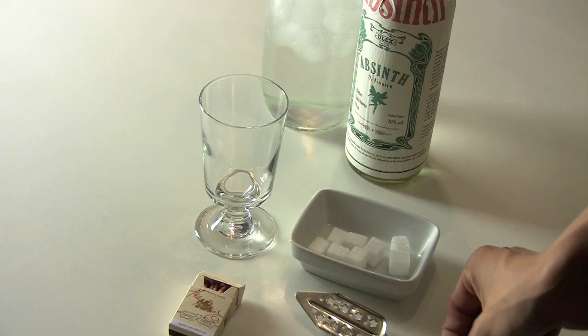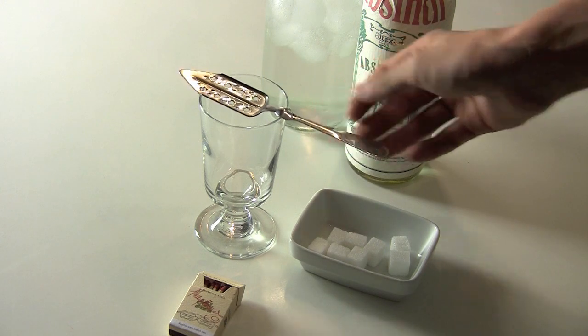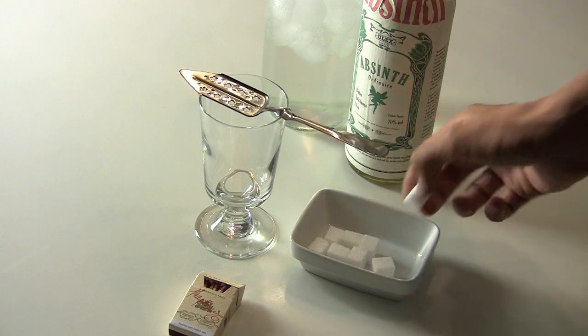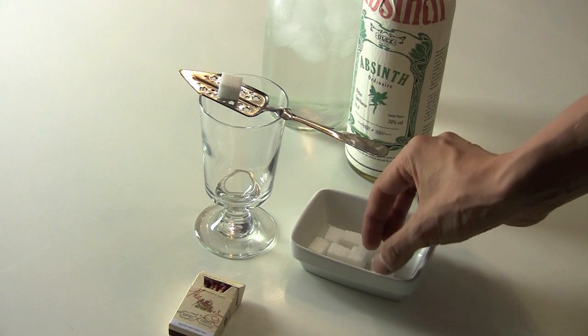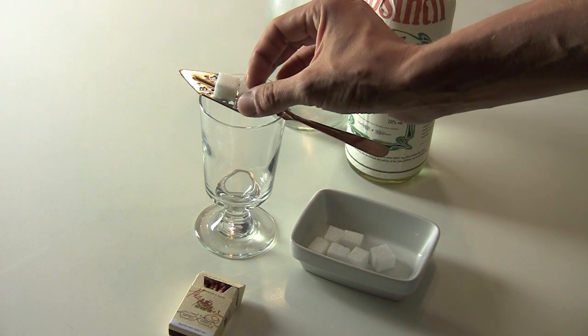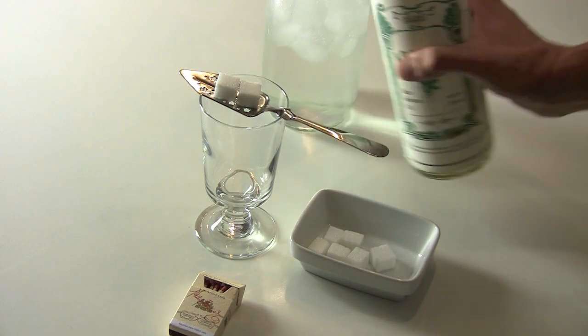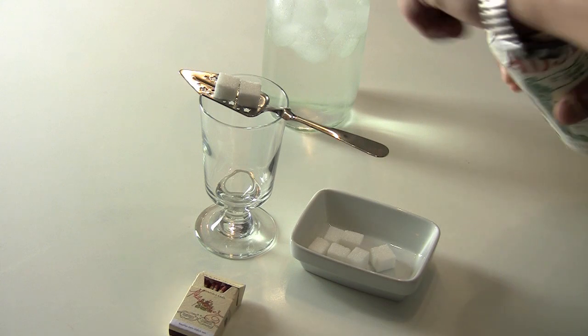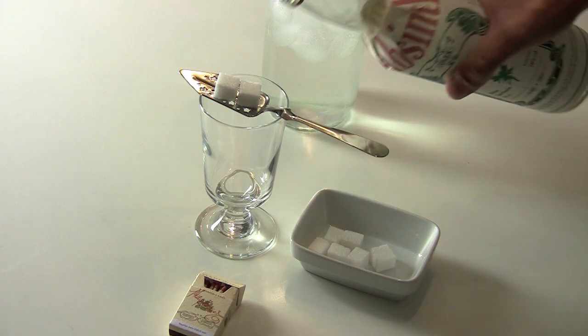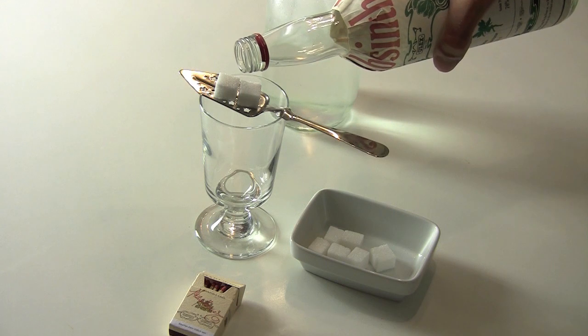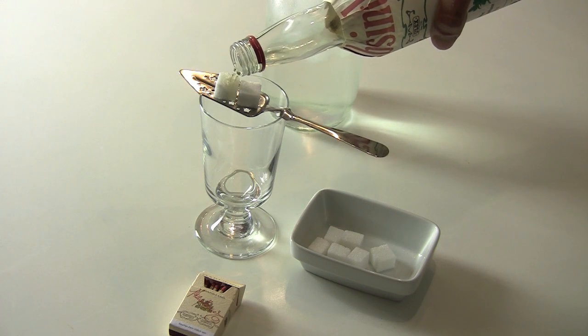On the absinthe spoon we will set a couple of sugar cubes, two to be exact, and we're gonna soak them in about one ounce, the same amount as a shot of absinthe. So first just pour the absinthe over and kind of eyeball about one ounce.